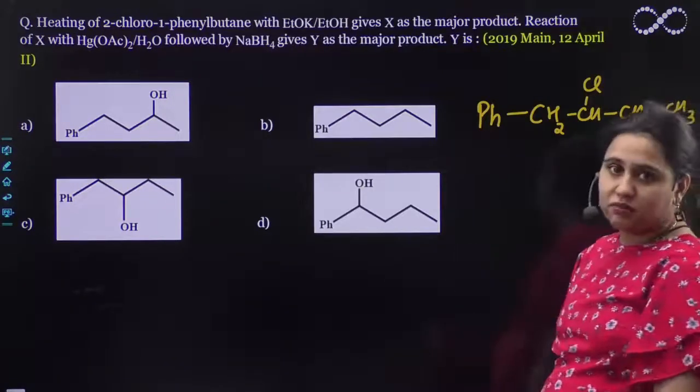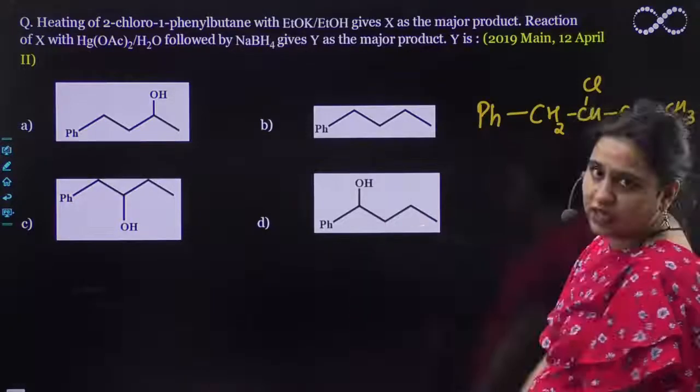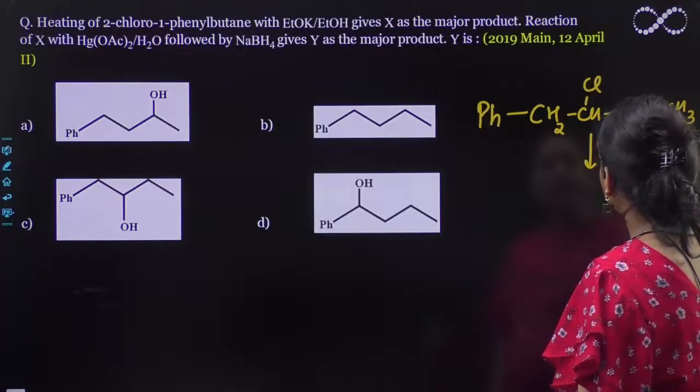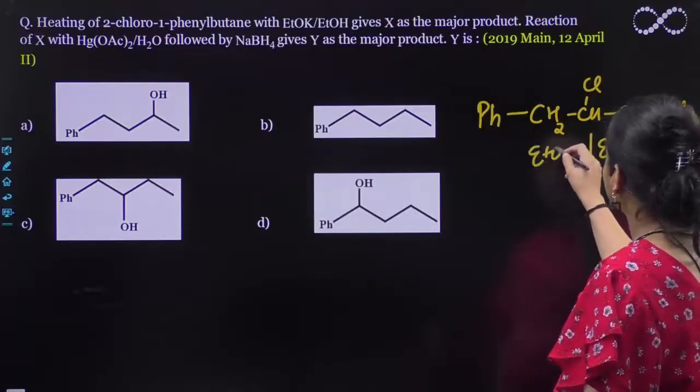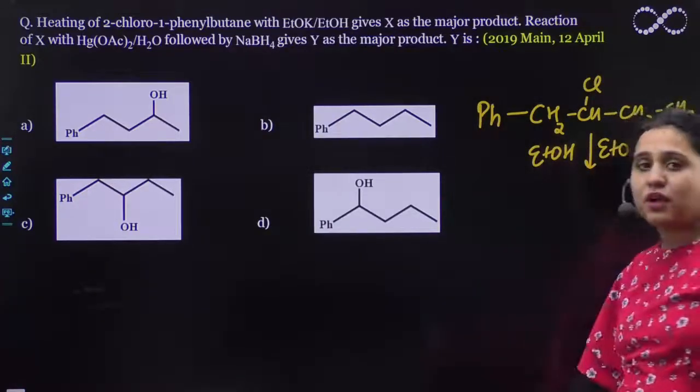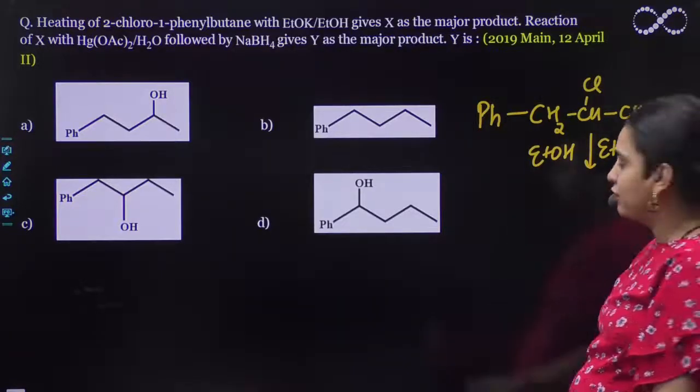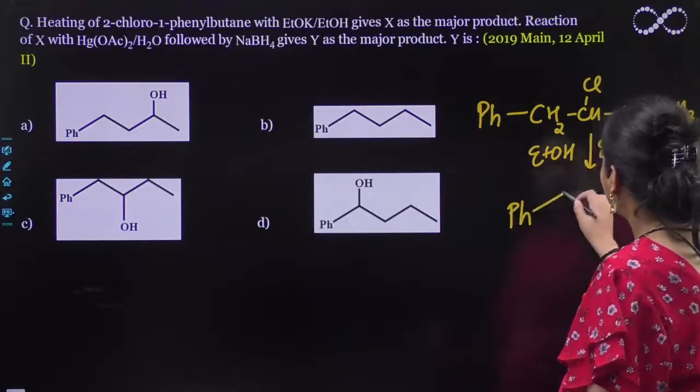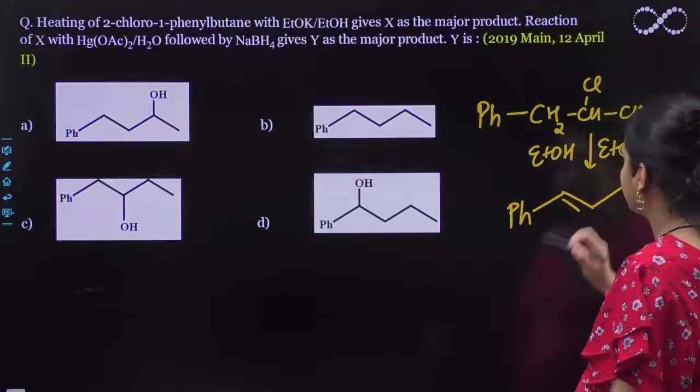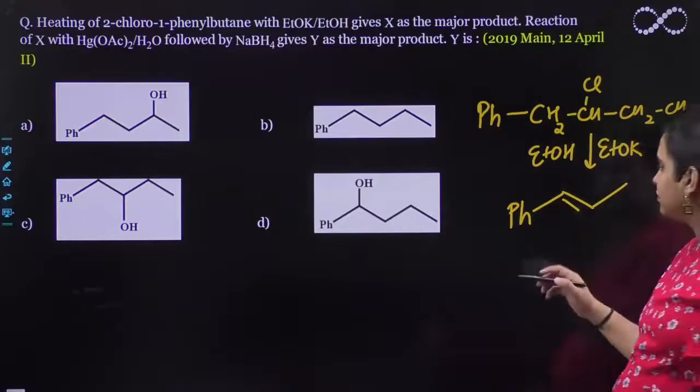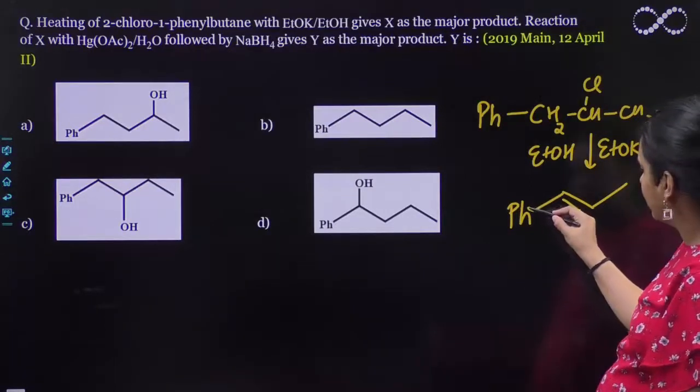When we react with potassium ethoxide in the presence of ethanol, it will be dehydrogenation, meaning the alkene will form. The alkene formed will be this one because it is in conjugation with the phenyl.